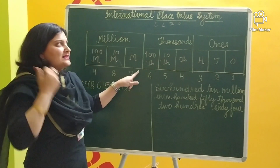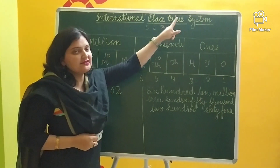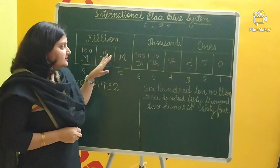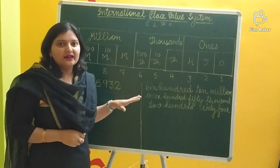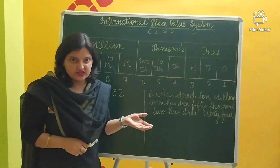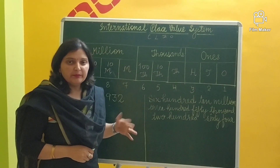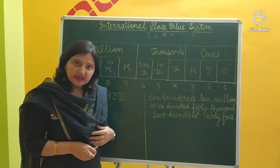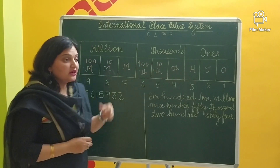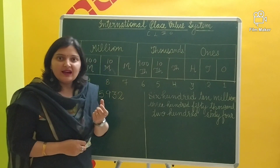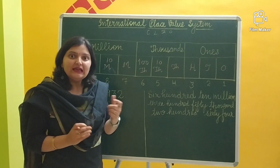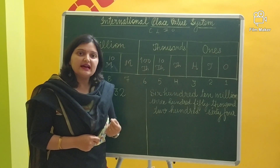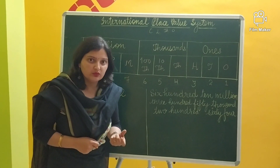So why is this system called the international place value system? Because this system is followed by the maximum number of countries all over the world, as compared to the Indian place value system, which is only used in India. The words crore and lakh are basically Hindi, or we can say Hindu-Arabic, words.